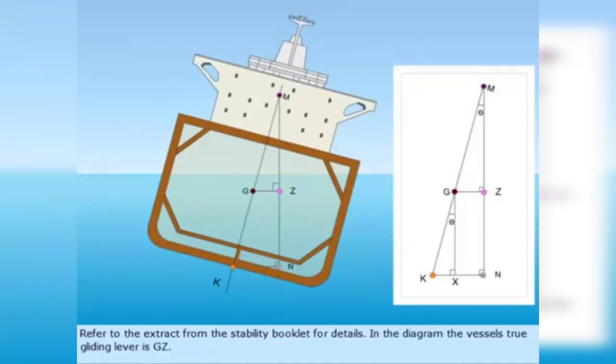Refer to the extract from the stability booklet for details. In the diagram, the vessel's true gliding lever is GZ.